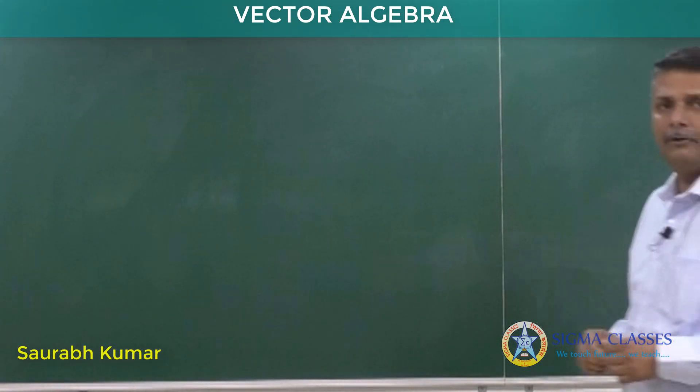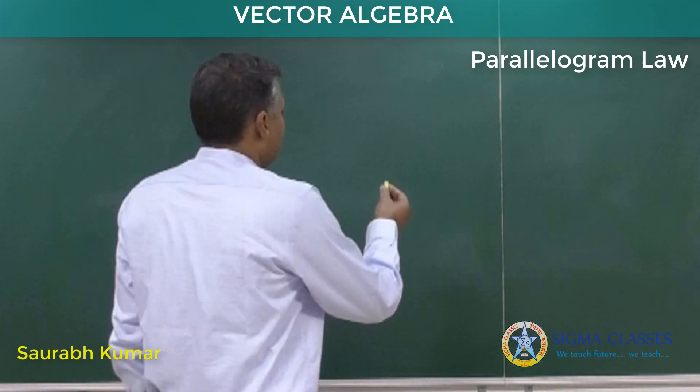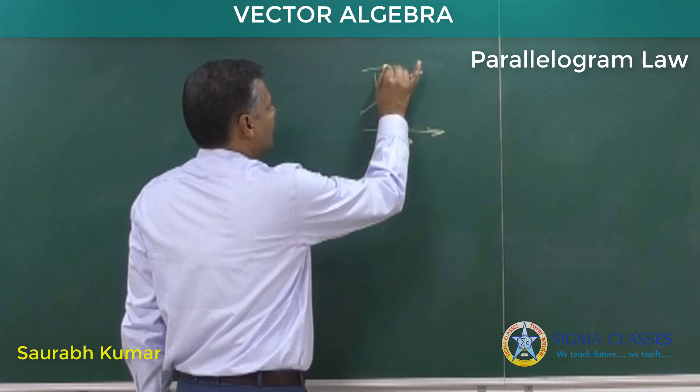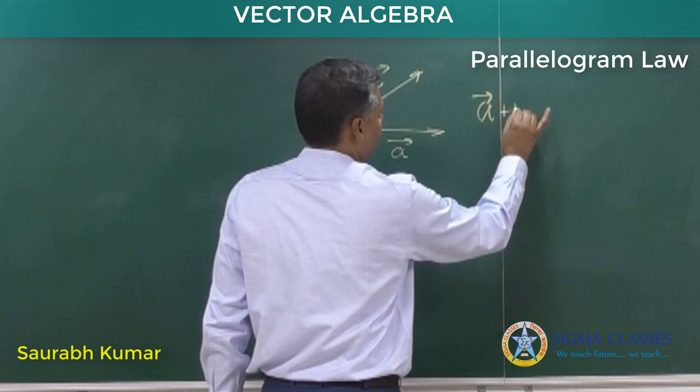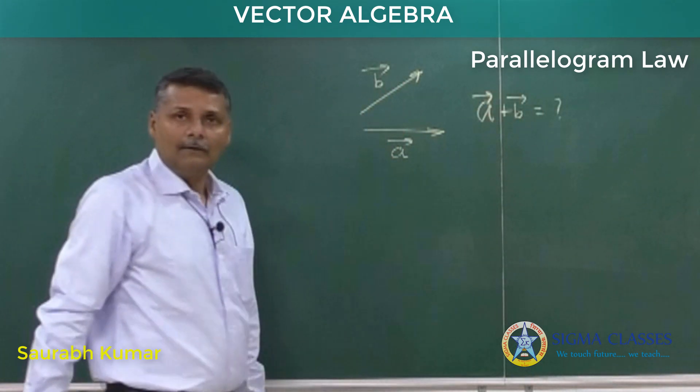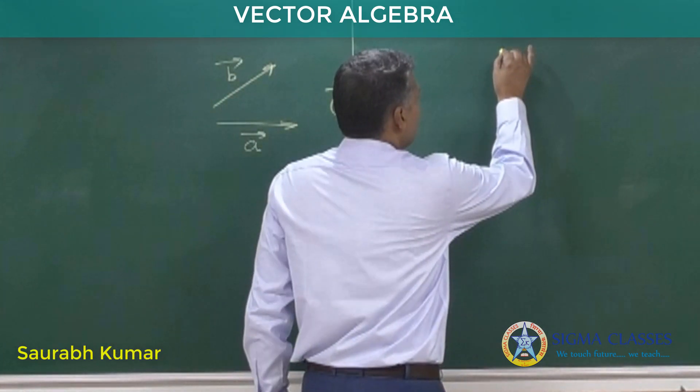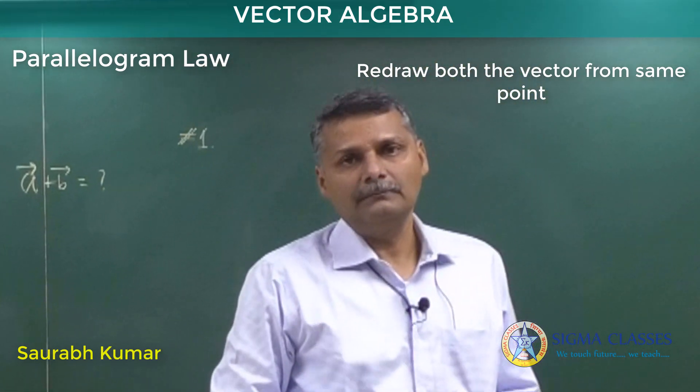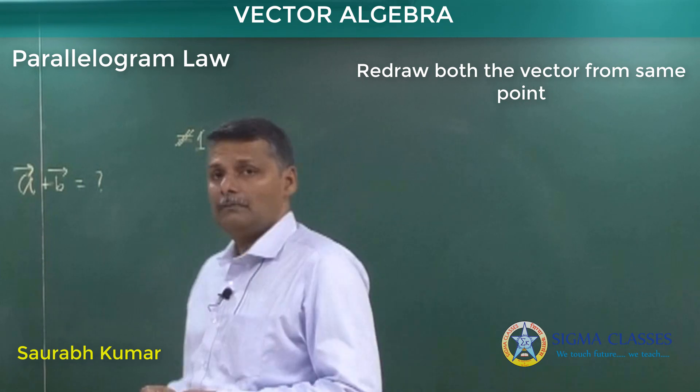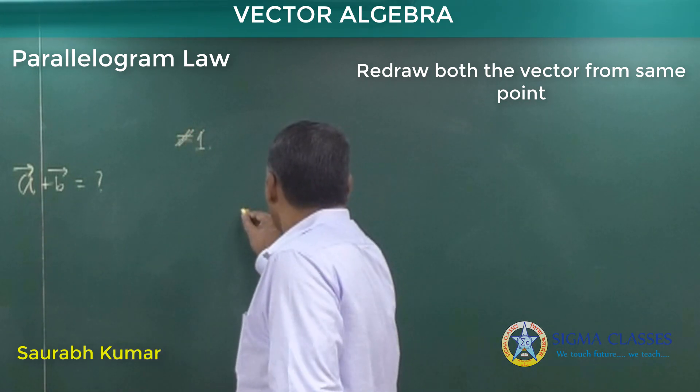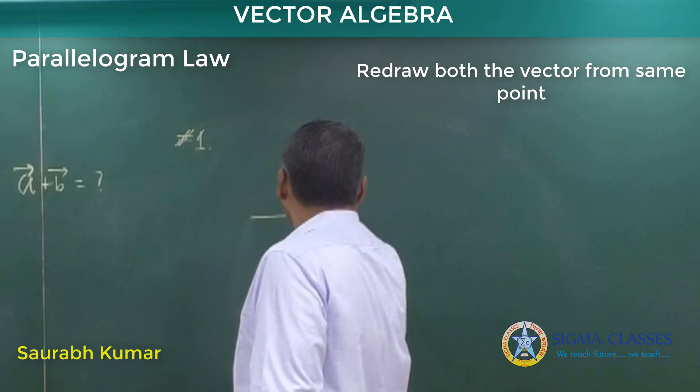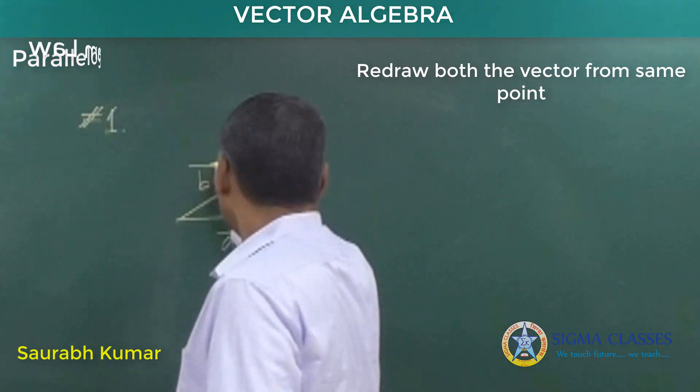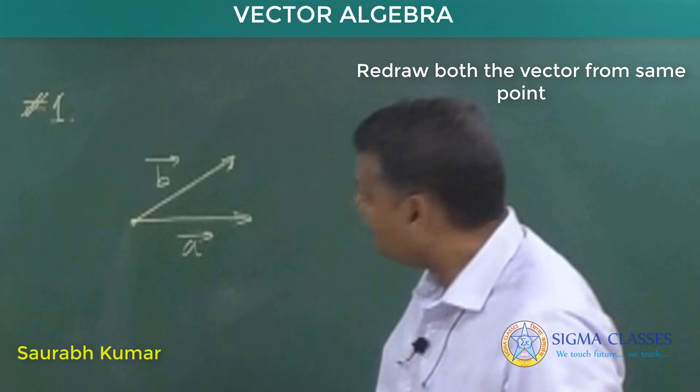Second law is the law of parallelogram. Again, let's consider the problem: two vectors are given, A and B. We have to find the resultant A plus B. In this law, step one: redraw both vectors from same point. So if we redraw both vectors from same point, this is what you get - both vectors are drawn from same point.